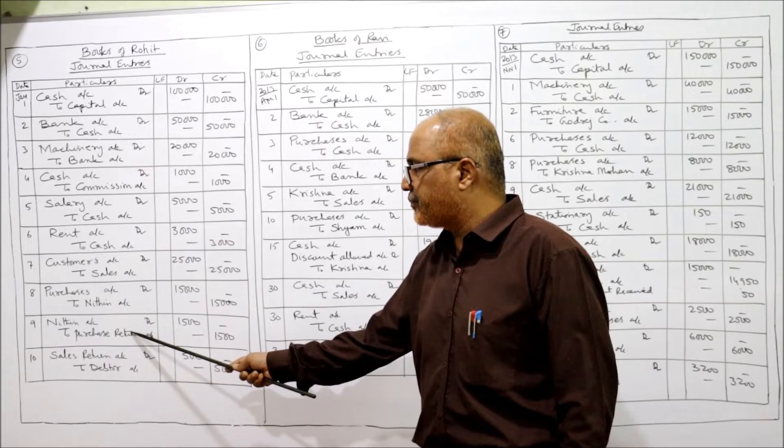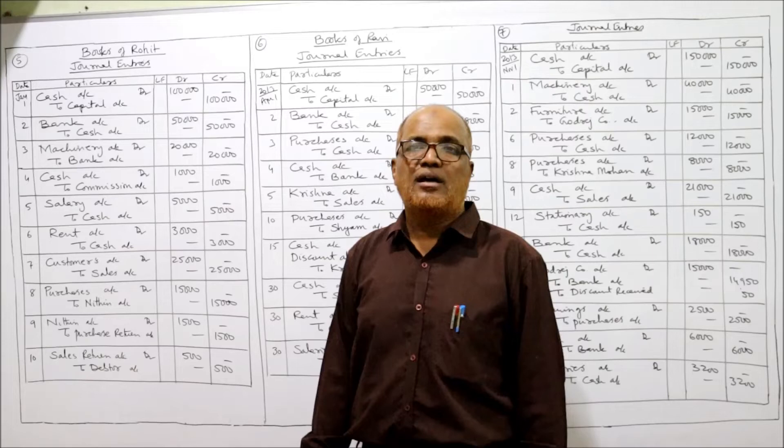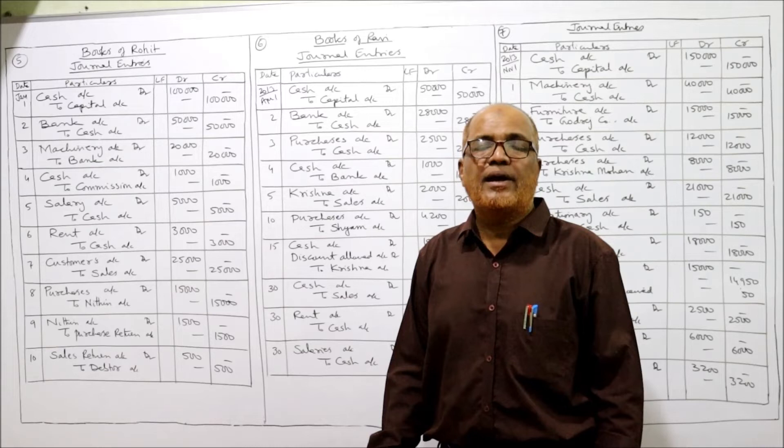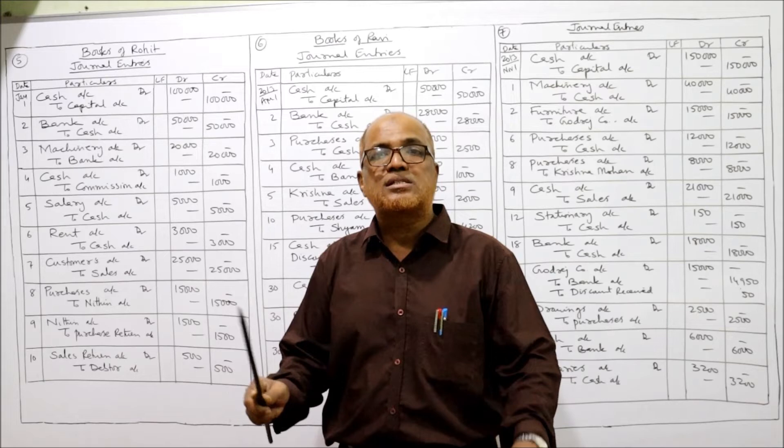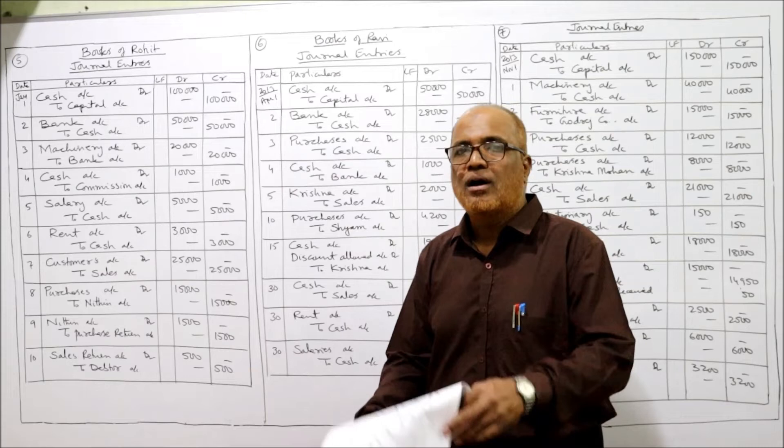Purchase return will be credited — purchases are always debited, purchase return will be credited. Entry: Nitin account debit to purchase return 1,500. Goods returned from Data — Data is the customer who has returned back the goods, it is called sales return. Earlier we sold goods to the customer, now the customer is returning them back. Entry: sales return account debit to Data account. That completes problem number five.